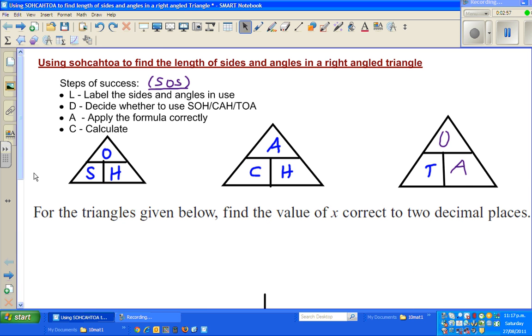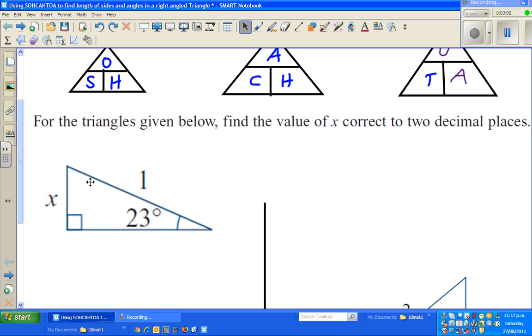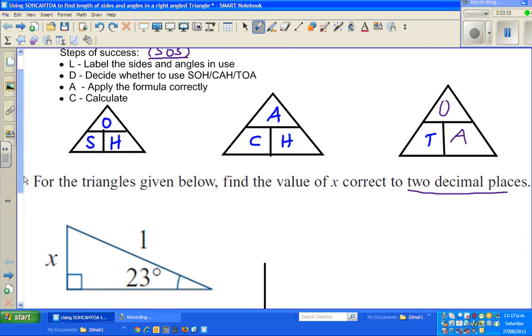Let us start with a very simple example. So this is the first example. You have got a right angle triangle and you have this angle. Now these triangles are not drawn to scale. So the question is, for the given triangle below, find the value of x correct to two decimal places. You want to find x. This angle is 23 degrees, and this is 1.